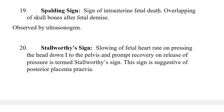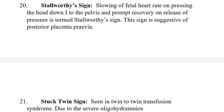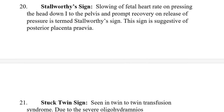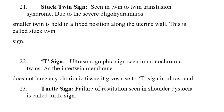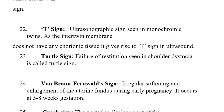Spalding's sign is a sign of intrauterine fetal death — there is overlapping of the skull bones after fetal demise; it is also an ultrasound sign. Starworthy sign is the slowing of fetal heart rate on pressing the fetal head down into the pelvis and prompt recovery on release of pressure — this is suggestive of a posterior placenta. Stuck Twin sign is seen in twin-to-twin transfusion syndrome: due to severe oligohydramnios, the smaller twin is held in a fixed position along the uterine wall.